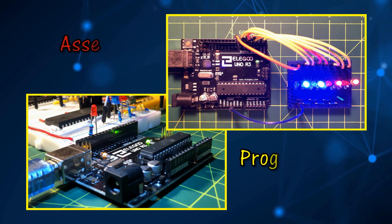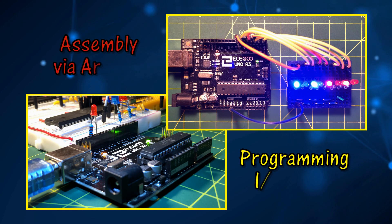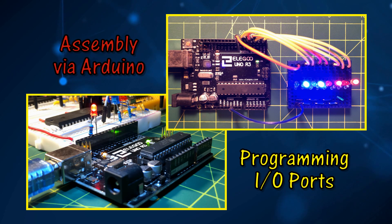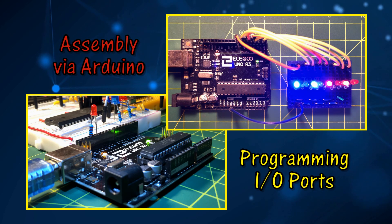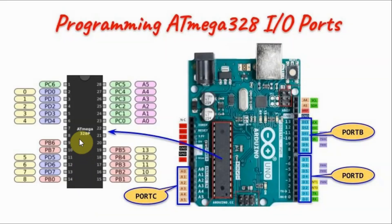In this part 3 video of Assembly via Arduino, the I/O ports of the ATmega328 microcontroller are programmed as digital ports to handle 8-bit data. The ATmega328 microcontroller has three 8-bit ports: ports B, C, and D.